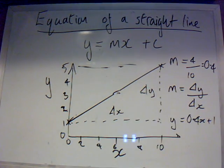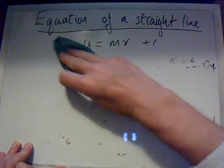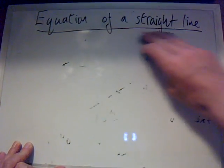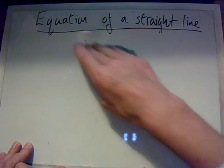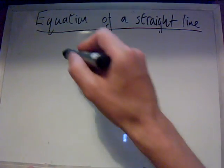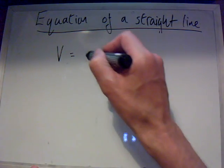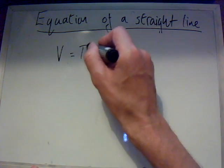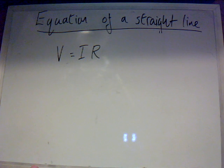Now how does it apply to physics? Well, let's rub this out. Now in physics we don't use y and x, we use other letters. Let's give a nice simple equation. Let's use the equation V is equal to current times resistance, V equals IR.